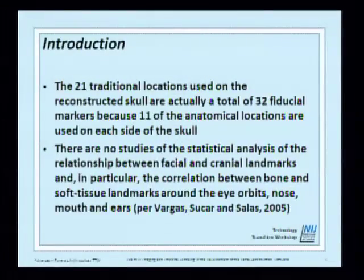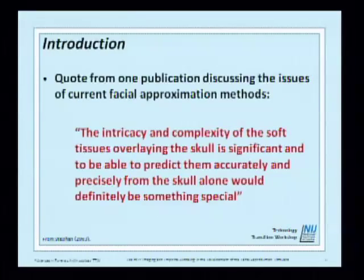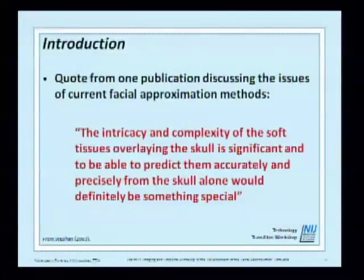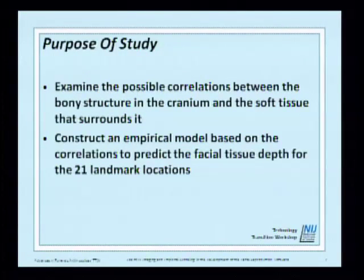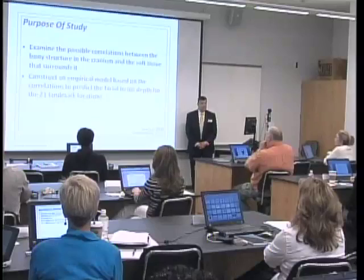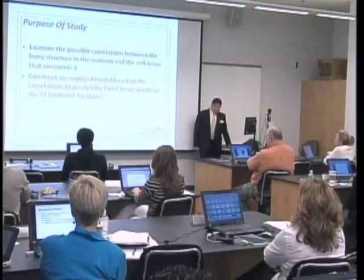There are no studies of statistical analysis of the relationship between facial and cranium landmarks, and in particular the correlation between bone and soft tissue landmarks around the eye, orbit, nose, mouth, and ears. This is a quote from one publication discussing the issues of current facial approximation methods: the intricacy and complexity of the soft tissues overlaying the skull is significant, and to predict them accurately from the skull alone would definitely be something special. The purpose of this study is to examine possible correlations between bony structure in the cranium and soft tissue that surrounds it, and to construct an empirical model to predict facial tissue depth for 21 landmark locations.